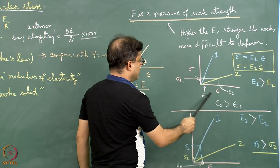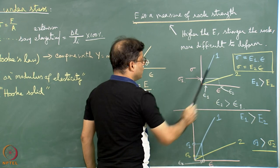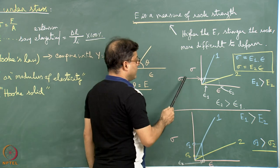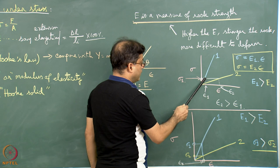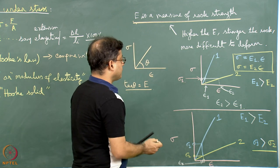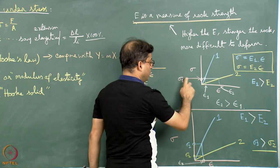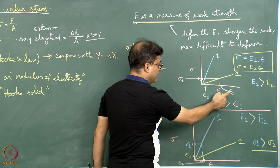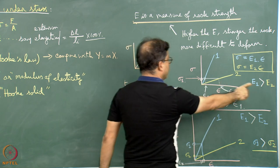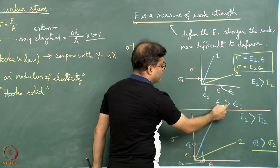Take for example stress plotted along the y-axis and strain along the x-axis. The blue line represents solid 1 and the yellow line represents material 2. For material 1 and 2, imagine applying a stress sigma 1 on both in different experiments. For material 1, dropping perpendicular to the strain axis gives epsilon 1 amount of strain. When the same stress is applied on body 2, epsilon 2 is the amount of strain. Since E1, the Young's modulus for solid 1, is more than that of solid 2, we can find graphically that epsilon 2 is more than epsilon 1.